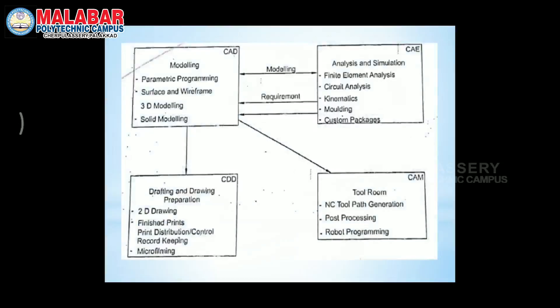This schematic diagram represents 4 blocks. CAE means Computer-Aided Engineering; CDD means Computer-Aided Drafting and Drawing preparation; and CAM means Computer-Aided Manufacturing. All modules are integrated in a production shop. They start by using CAD, where they design the main model.